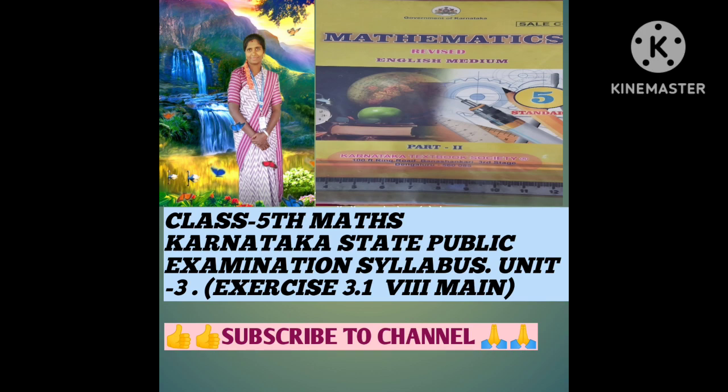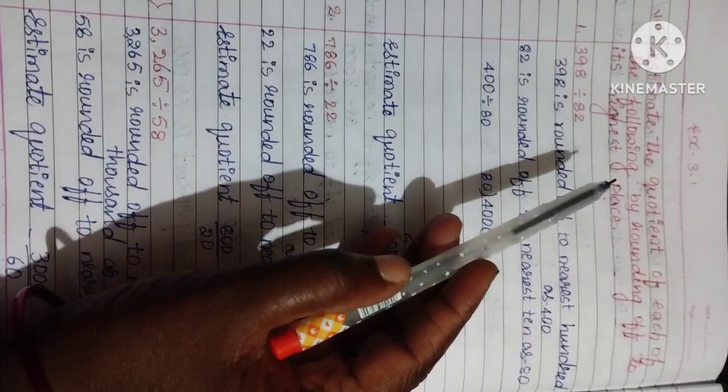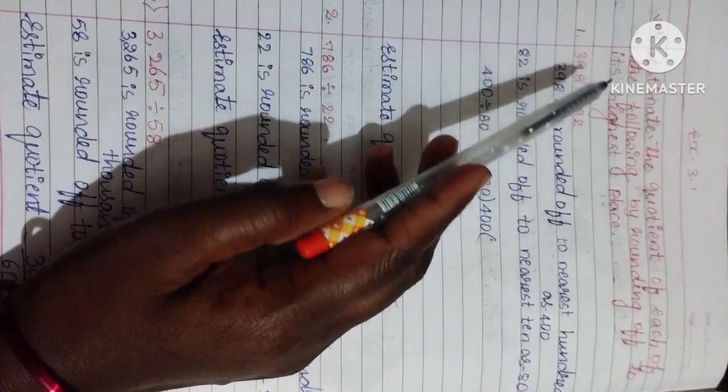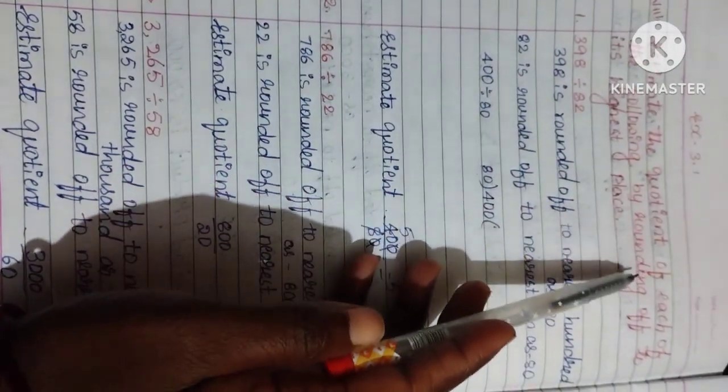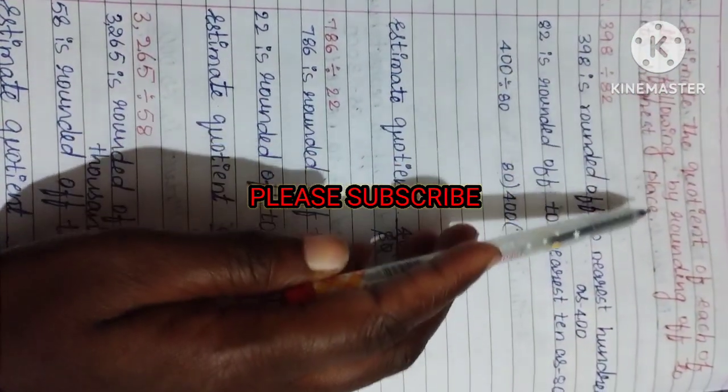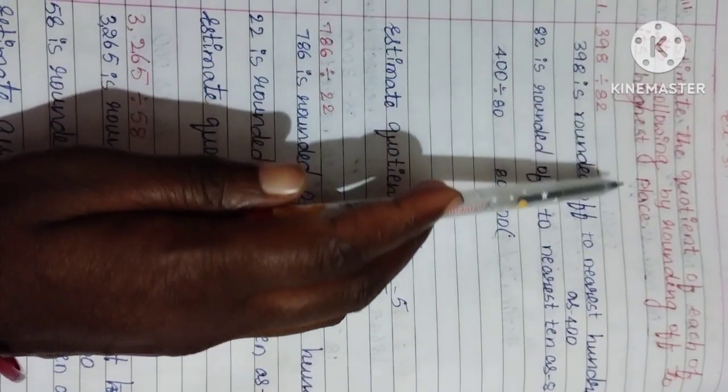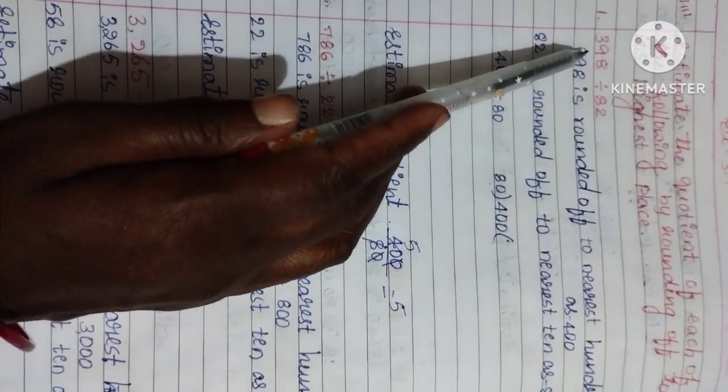Thank you for watching. Please subscribe to my channel. Let me start now. Exercise 3.1 8th main. Estimate the quotient of each of the following by rounding up to nearest highest place.